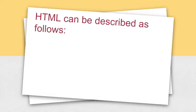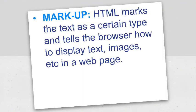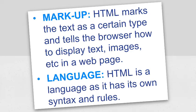As HTML stands for Hypertext Markup Language, it can be described as follows. Hypertext is a text used to link various web pages. It is the text on a web page which on clicking opens a new web page. Markup: HTML marks the text as a certain type and tells the browser how to display text, images, etc. in a web page. HTML is considered a language as it has its own syntax and rules.